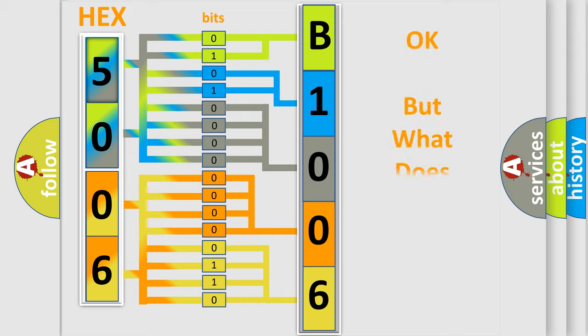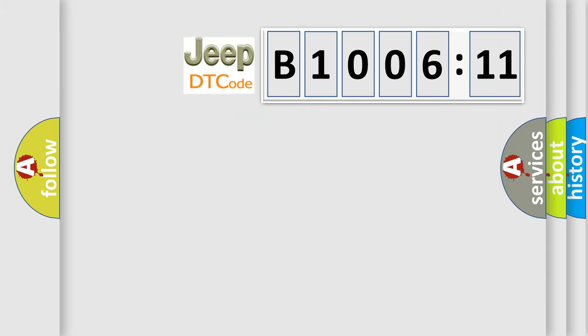We now know in what way the diagnostic tool translates the received information into a more comprehensible format. The number itself does not make sense to us if we cannot assign information about what it actually expresses. So, what does the diagnostic trouble code B100611 interpret specifically for Jeep car manufacturers?